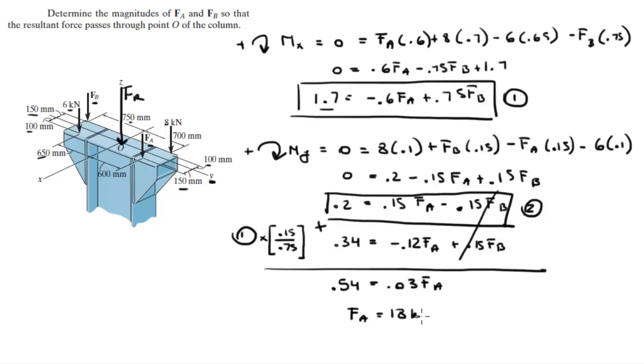Then you just plug this result into equation 1 or equation 2, whichever one you choose. I plug it into equation 1 right here, and then you solve for FB. You get that FB equals 16.7 kilonewtons.